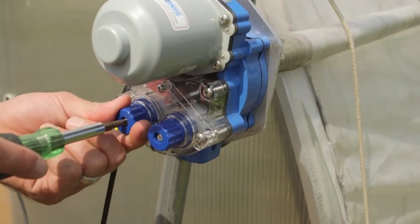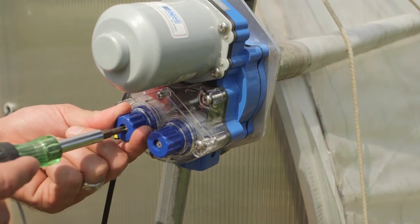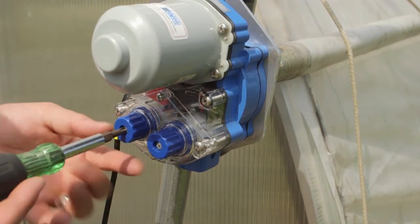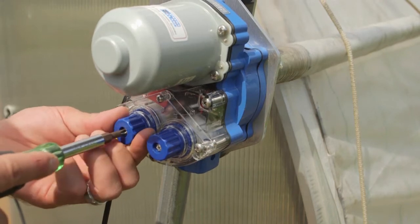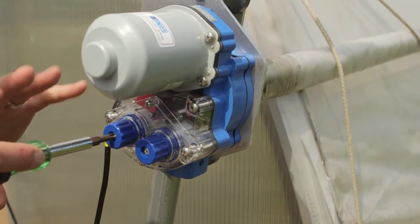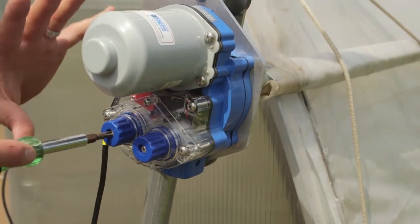What you do is loosen this screw right here ever so slightly. Actually, let me tighten it up first. So you just loosen it just a hair and turn this blue knob. When you do that, it goes about an inch and a half to two inches.